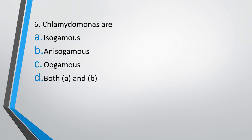Question 6: Chlamydomonas are — Option A: Isogamous. Option B: Anisogamous. Option C: Oogamous. Option D: Both A and B. The correct answer is Option D, Both A and B.